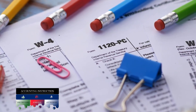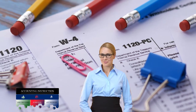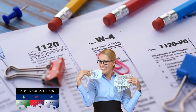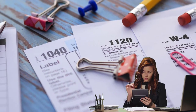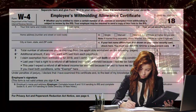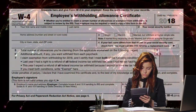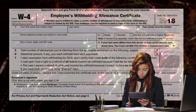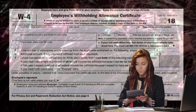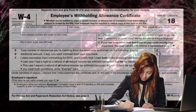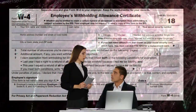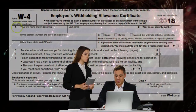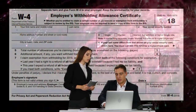The W-4 deals with exemption amounts and how much is going to be withheld from an employee's paycheck for federal income tax. This is related to the tax filing at the end of the year by the employee using Form 1040. So the W-4 withholdings and the employee's reporting of the 1040 at the end of the year are going to have a relationship to each other.